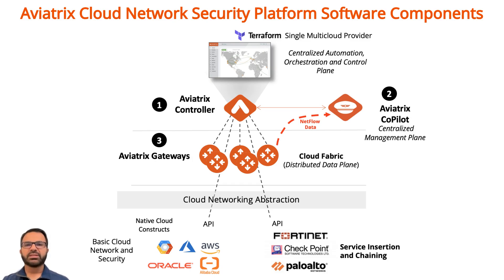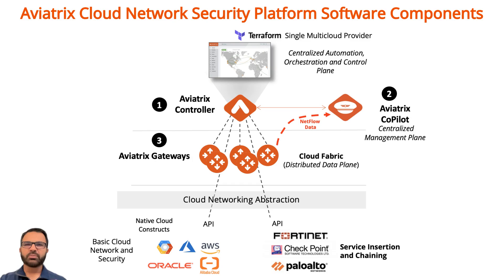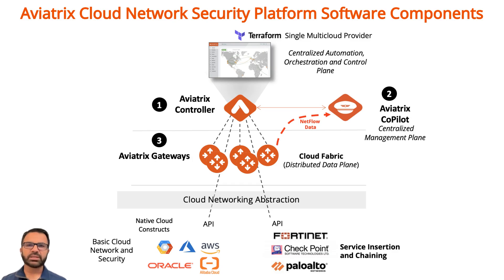The Aviatrix system uses a software-defined networking (SDN) approach through three main software components. One: a controller for the centralized control plane. Two: co-pilot for centralized management and visibility. Three: gateways for the distributed data plane. This structure provides a secure overlay network on top of existing CSP infrastructure, ensuring secure egress, high-performance encryption, and comprehensive network management.